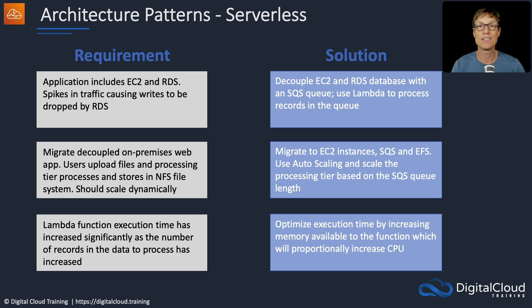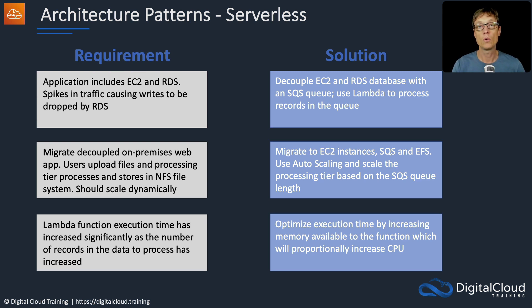Another way to optimize is to scale by having additional invocations of your function. You need to understand how to use both approaches together — on one hand you might need more memory and CPU, but also if you're processing a lot of records at the same time, doing them in parallel with lots of invocations is a good idea.